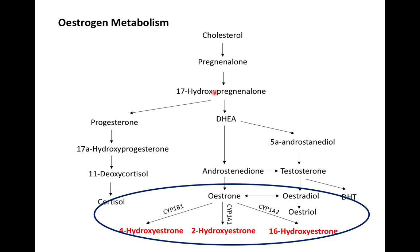It's metabolized via different enzymes into progesterone, which then converts down into cortisol, or it moves into DHEA, which goes on to make androstenedione, testosterone, estradiol, estrogen, and estriol. Estriol is the estrogen in pregnancy, estrone is the estrogen in menopause, and estradiol is the estrogen in menstruating women before they go through menopause.